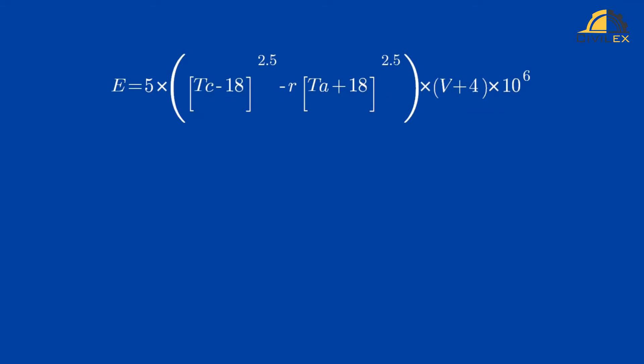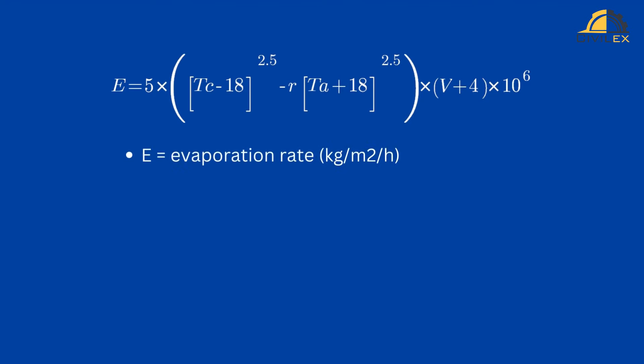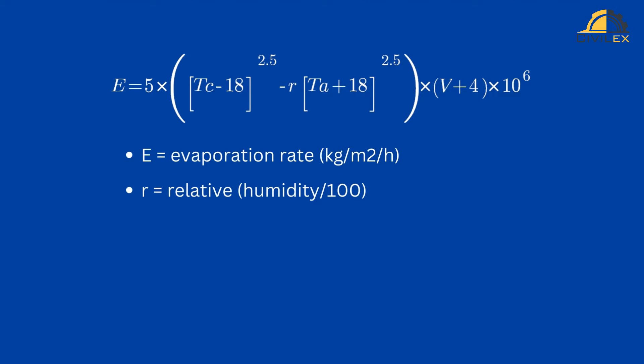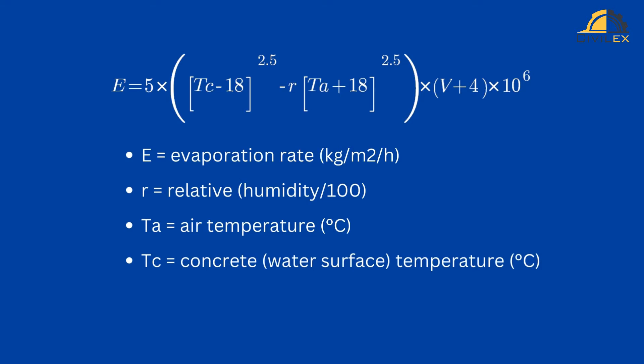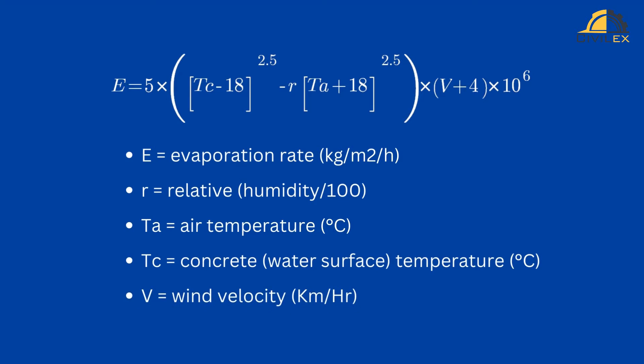This formula helps estimate evaporation rates, where E is evaporation rate, R is relative humidity, TA is air temperature, TC is concrete or water surface temperature, and V is wind velocity.